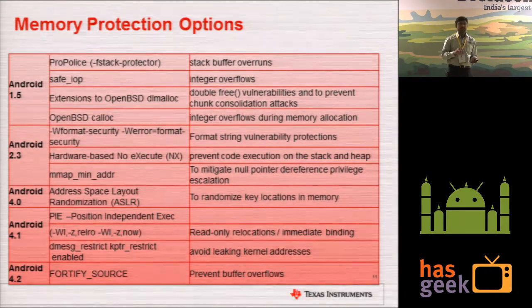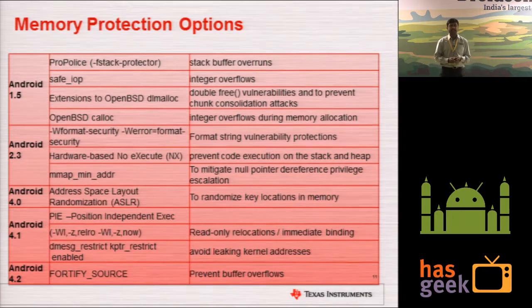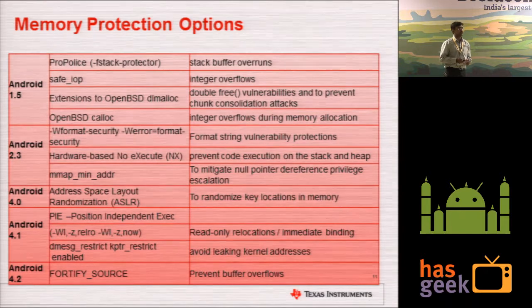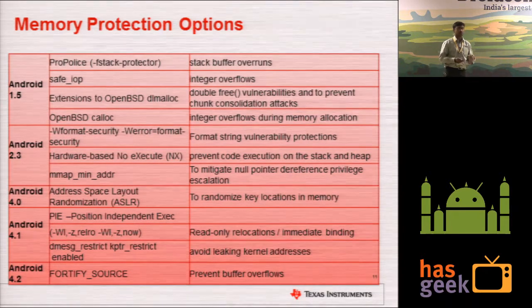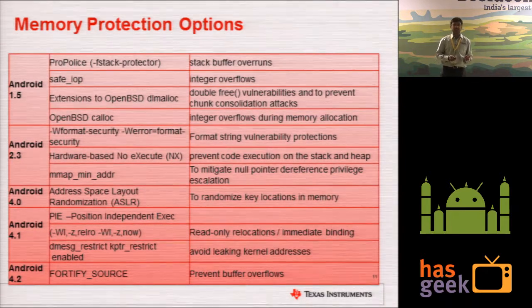You can find these compiler options in the build directory or in the pre-built toolchain directory. The Android toolchain is different from the normal ARM GCC toolchain.